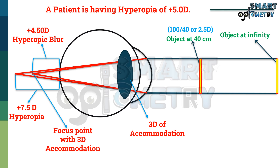So a patient with moderate to high hyperopia sees blur both at distance and near, or sees more blur at near than at distance, which increases the risk of developing amblyopia. That is why the prevalence of amblyopia is more common in hyperopia than in myopia.